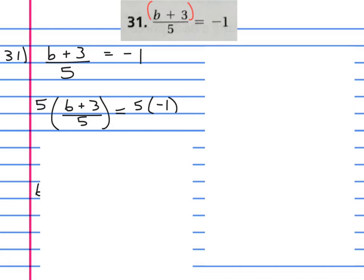Five times all of that equals five times all. Now we're simplifying. We multiplied by five to undo this divided by five, so both of those things will disappear, leaving just b plus three. Then this five times the negative one is negative five.